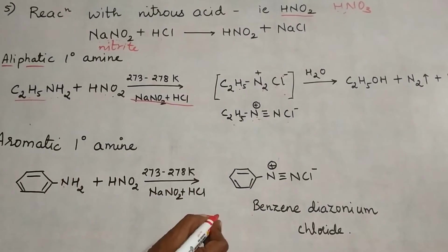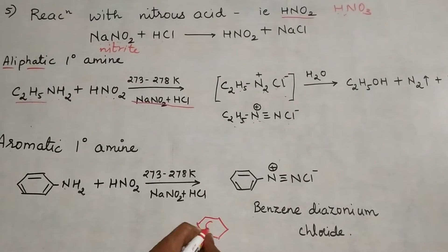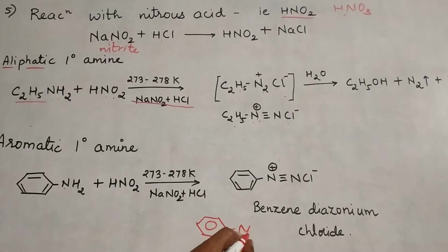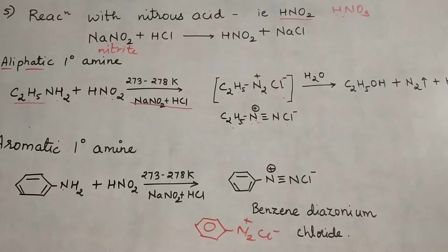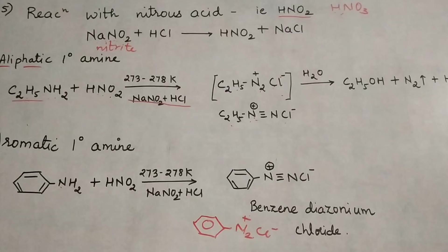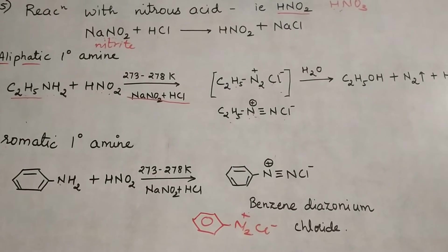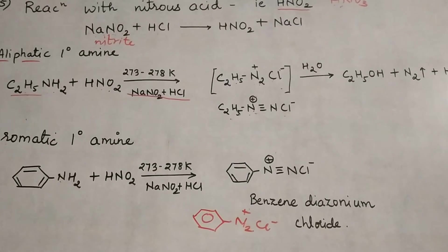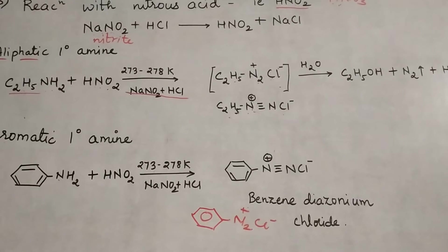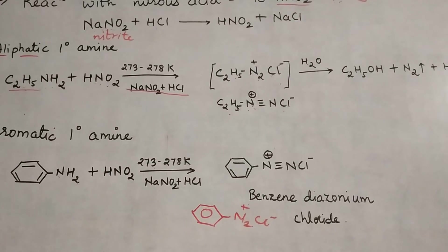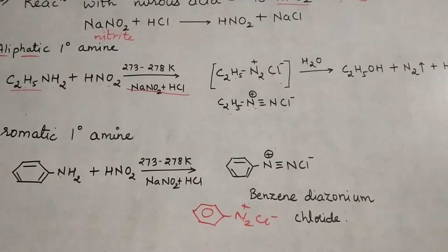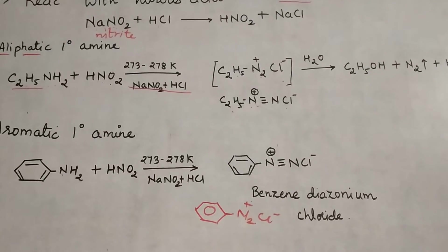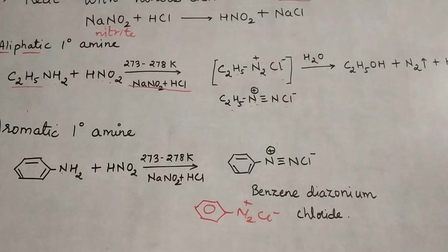The product is benzene diazonium chloride: a benzene ring with N2+ and Cl−. The reaction stops here because benzene diazonium chloride, formed from the aromatic primary amine, is quite stable and does not proceed further.